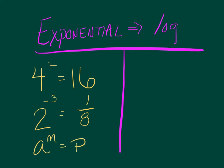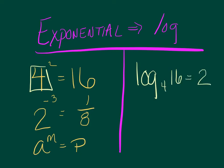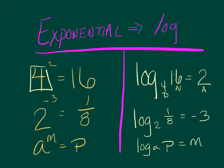This time I'm going backwards — exponential to log form. I'll do the first one with you. I'm going to say: this is log, this is my base, this is what it equals, and this is my exponent. Using DNA → Dan: 4 squared equals 16. Pause it, grab the next two. I've got log base 2 of 1/8 equals negative 3, and log base A of P equals M. So there's our converting log to exponential and exponential to log.